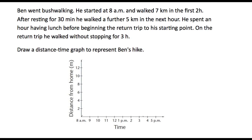Here's an example of how to transfer real-life situations into a graph. Let's look through the question and highlight the important parts. Ben was bushwalking and started at 8 a.m. — here's our starting point, they've even started the graph there for us. He walks seven kilometers in the first two hours, so from 8 o'clock through to 10 o'clock, he walks seven kilometers — about there.